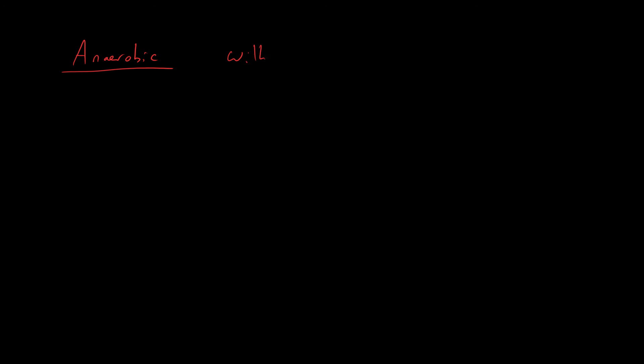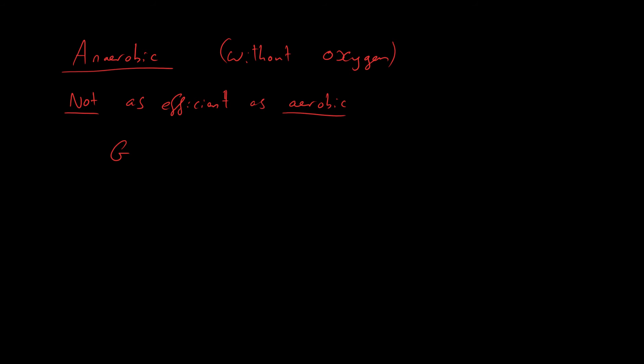Now let's look at anaerobic respiration — what happens when your cells don't have enough oxygen to carry out respiration as fast as needed. Anaerobic respiration means without oxygen. Importantly, anaerobic respiration is not as efficient as aerobic respiration because you don't get as much energy out of each glucose molecule — the glucose is not fully broken down.